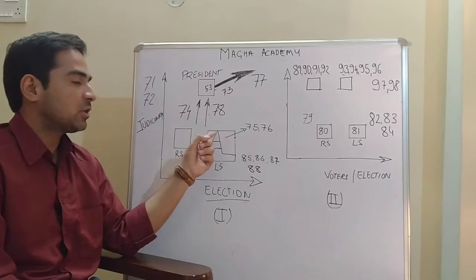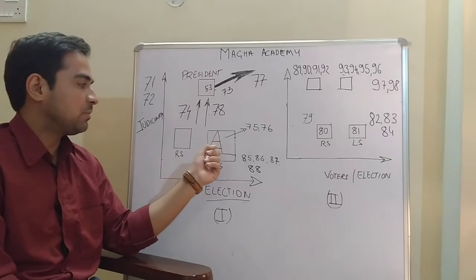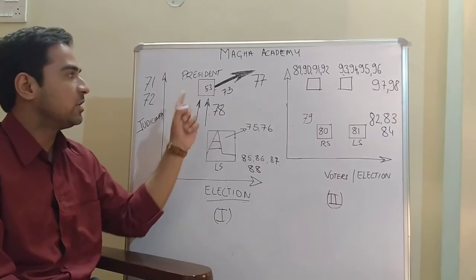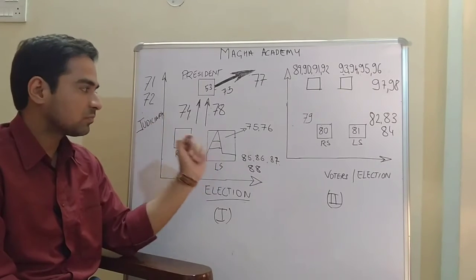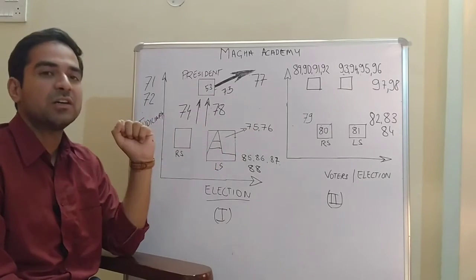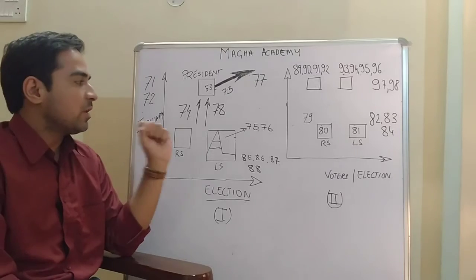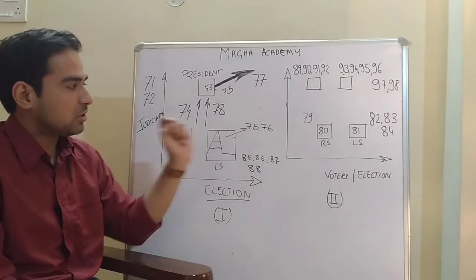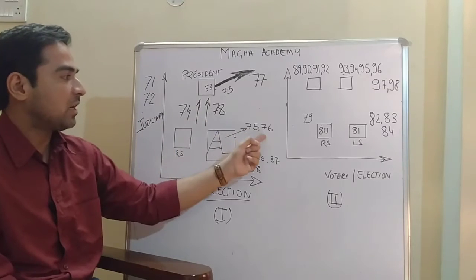The ministers hold collective responsibility to the Lok Sabha and individual responsibility to the President. Article 75 is very important in parliamentary democracy. In Article 75, there is also the oath of the minister.